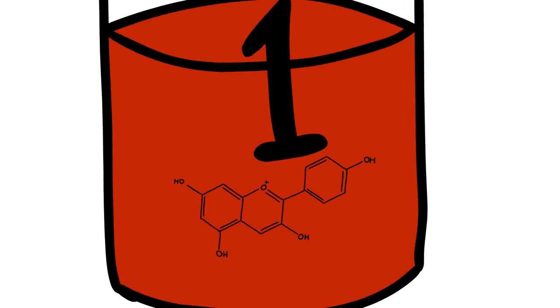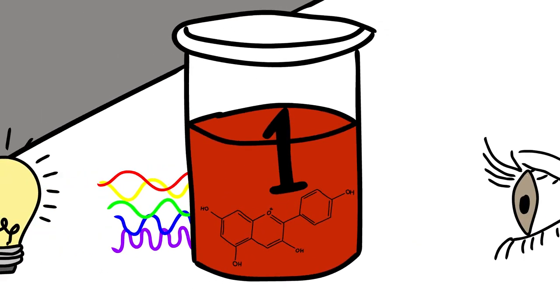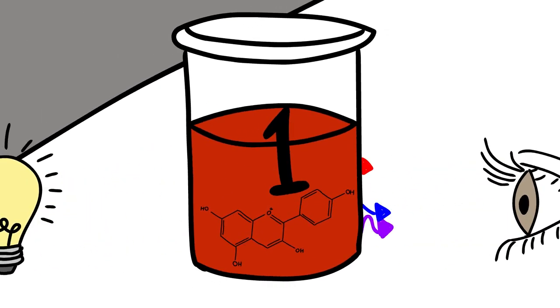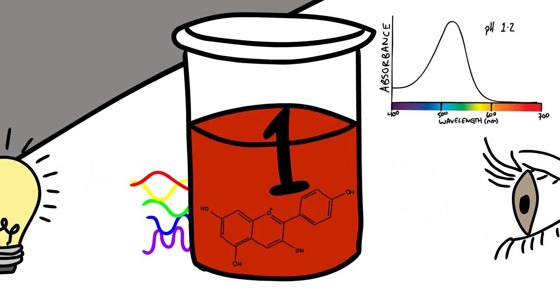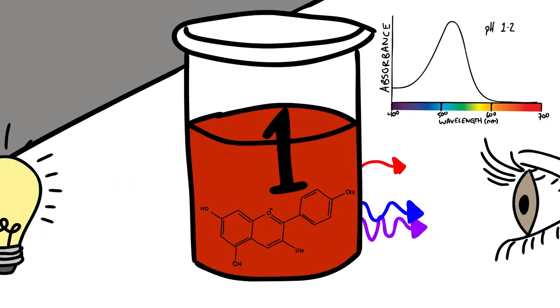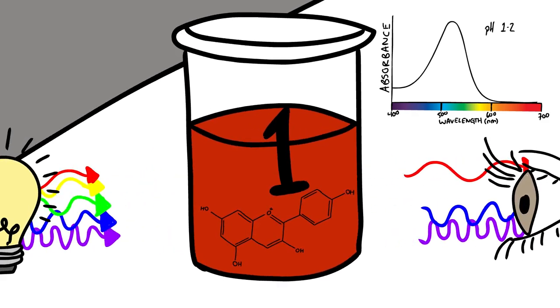This change in shape affects the way the molecule interacts with incoming light, so much more of the incoming yellow-green light is absorbed, causing the reflected or transmitted light to be vibrant red color, red mixed with some purple and blue.